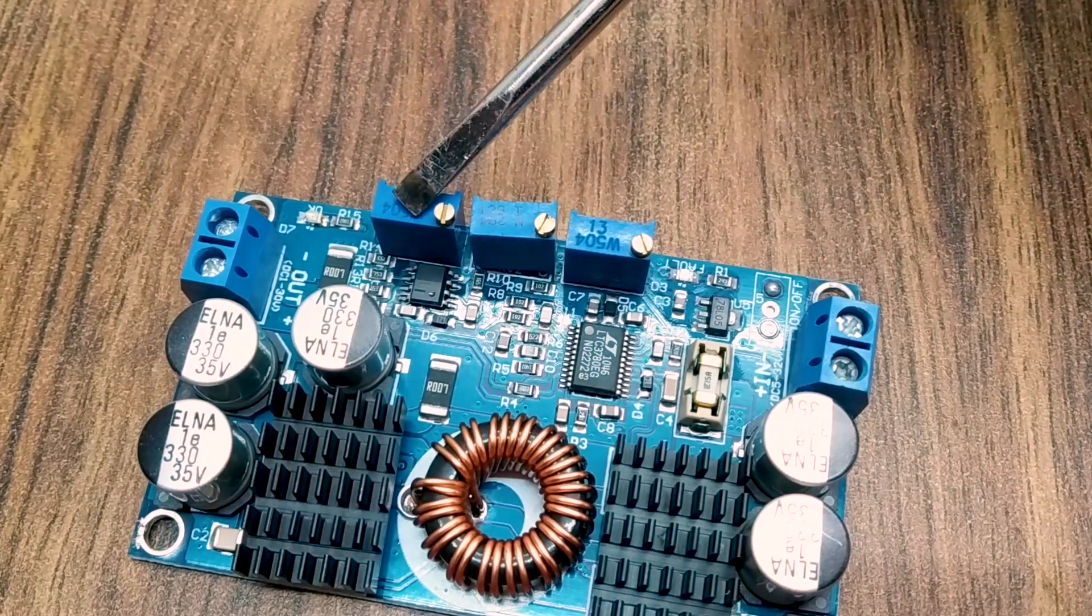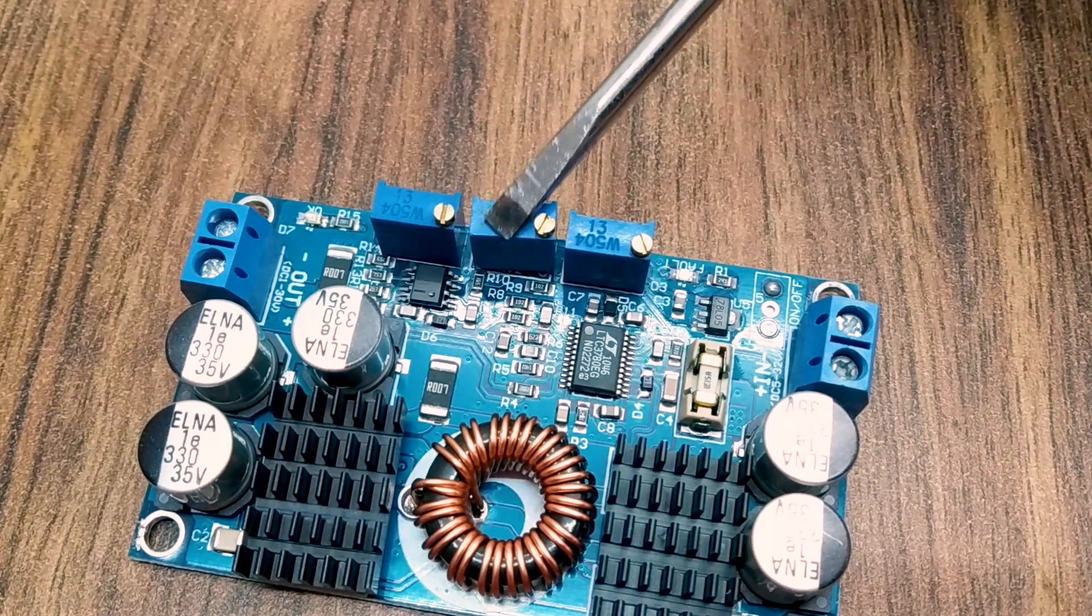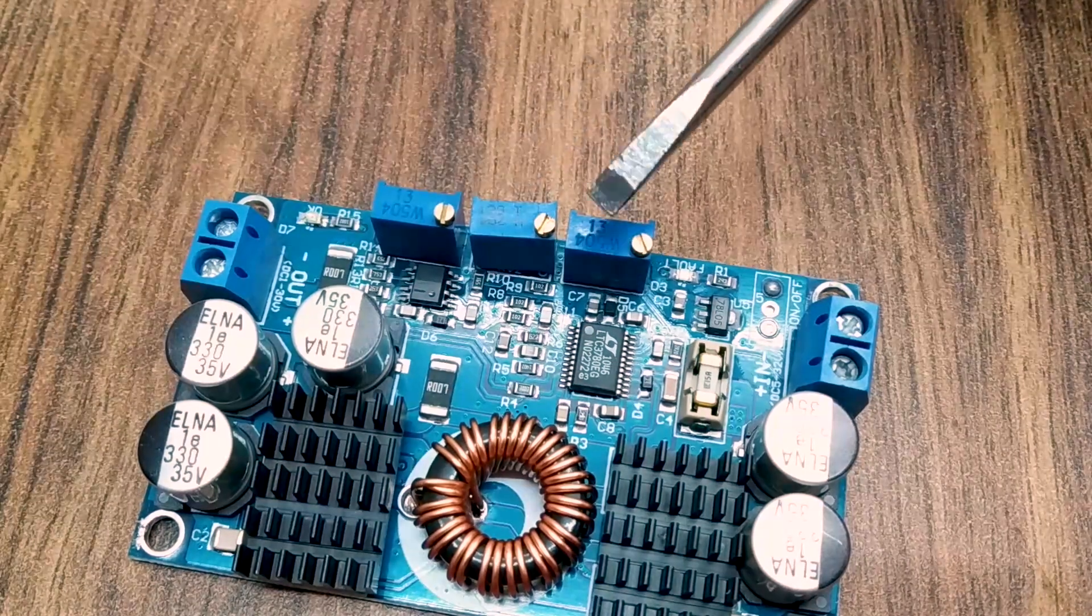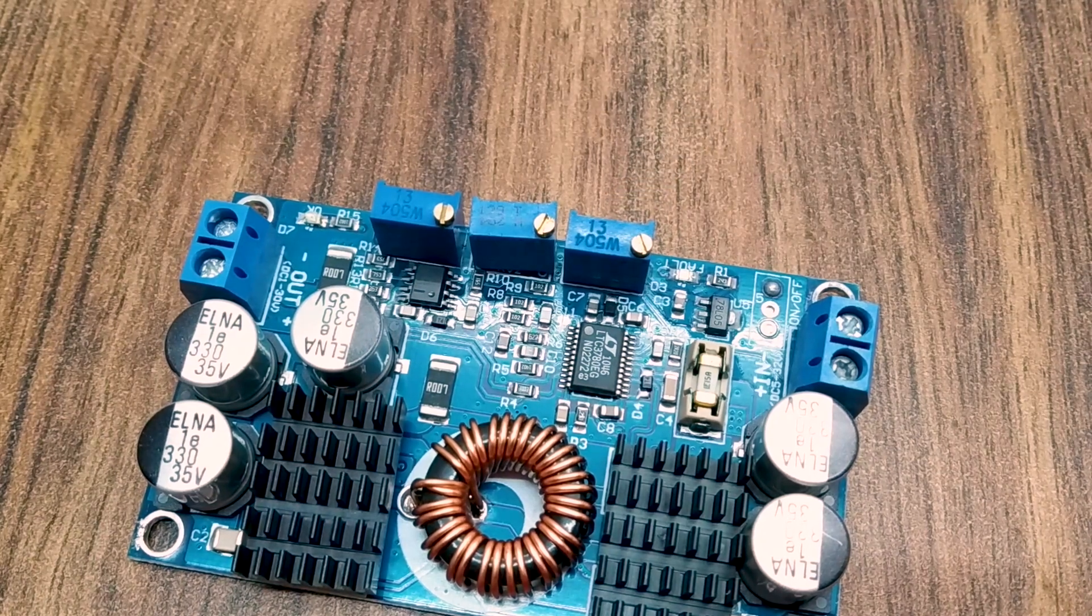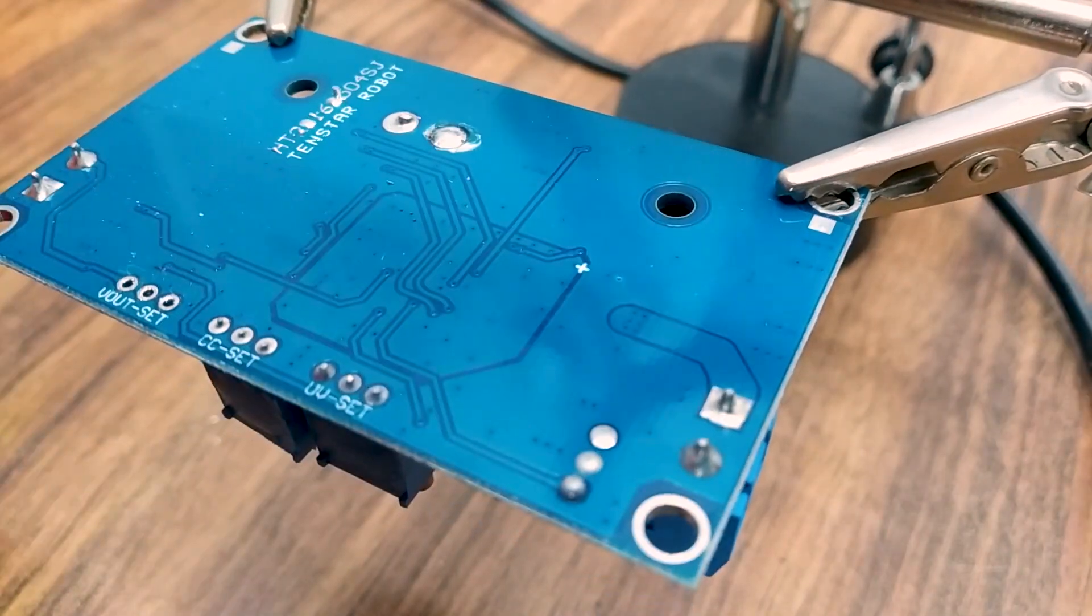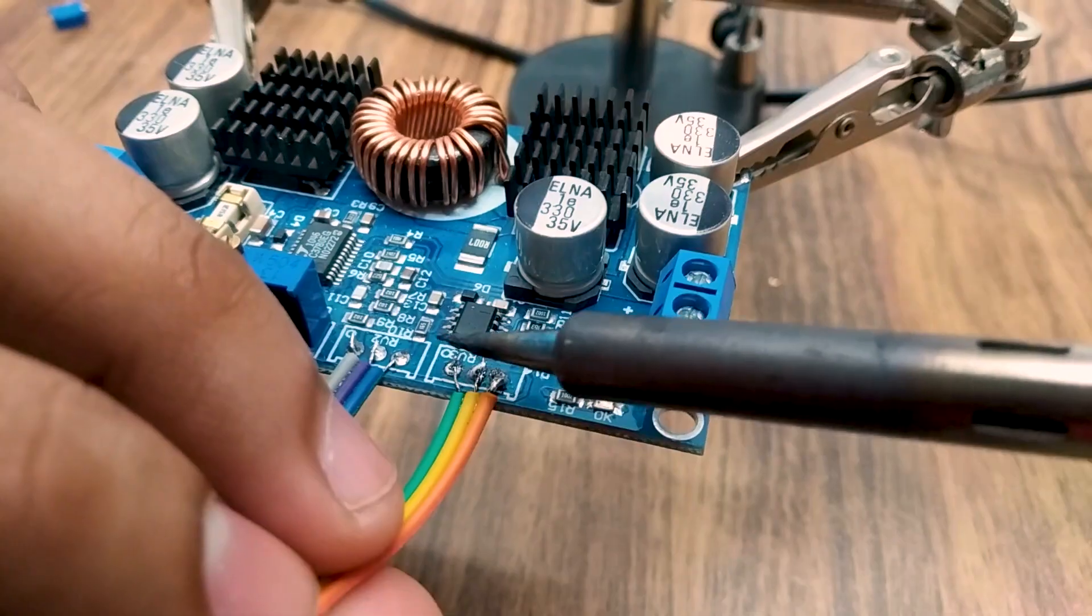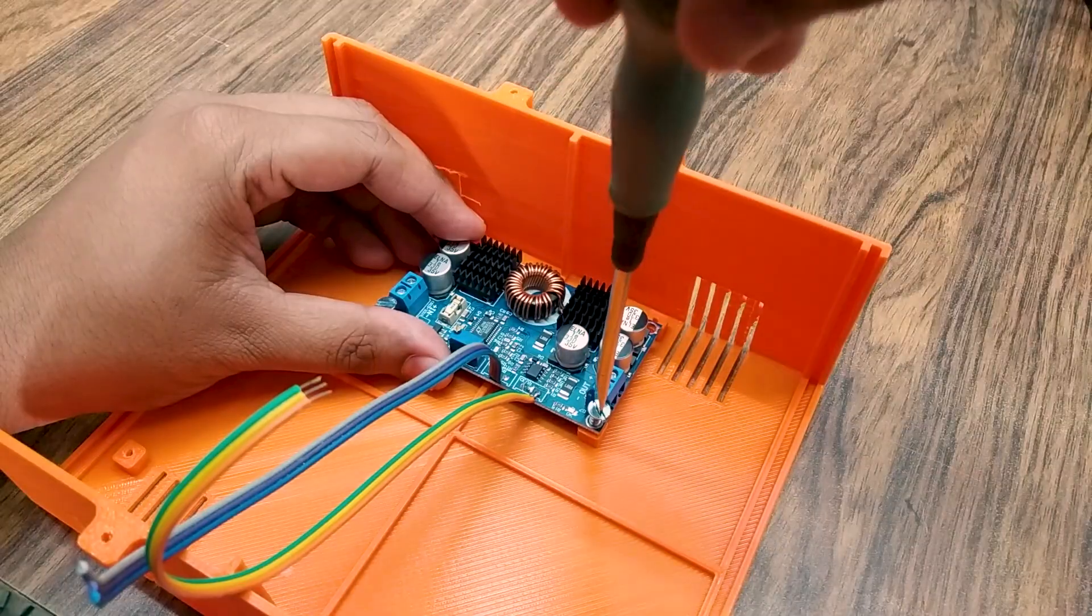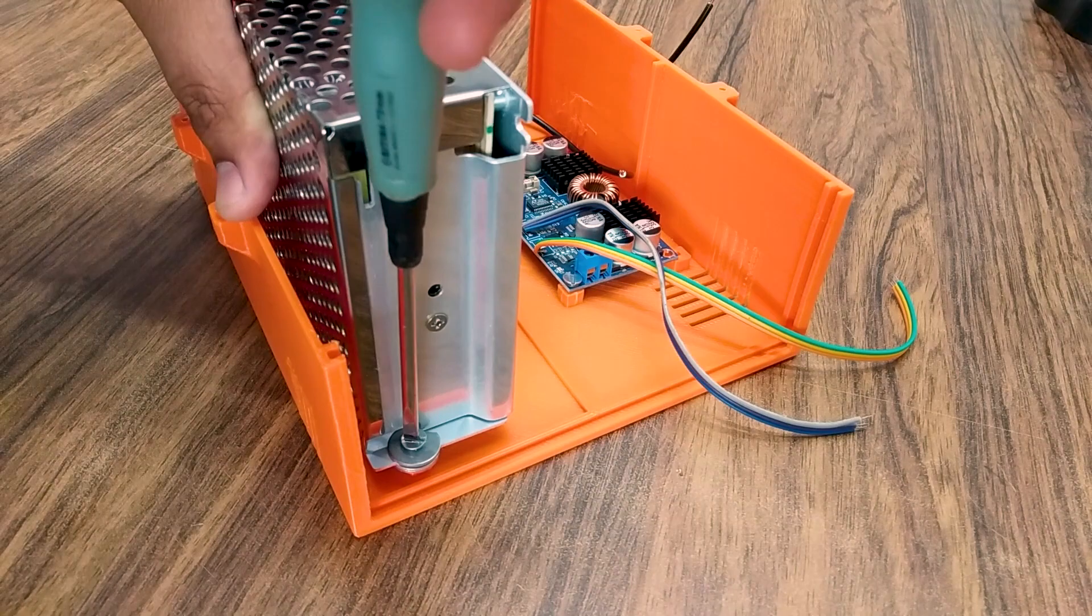On the LTC3780, the left potentiometer is for voltage adjustment, the second one is for current, and the third one is for voltage cutoff which is a function we will not use as of now. I desoldered the potentiometers on the module and soldered wires for the bigger potentiometers. I fixed the module and the power supply in the casing and made the rest of the connections.